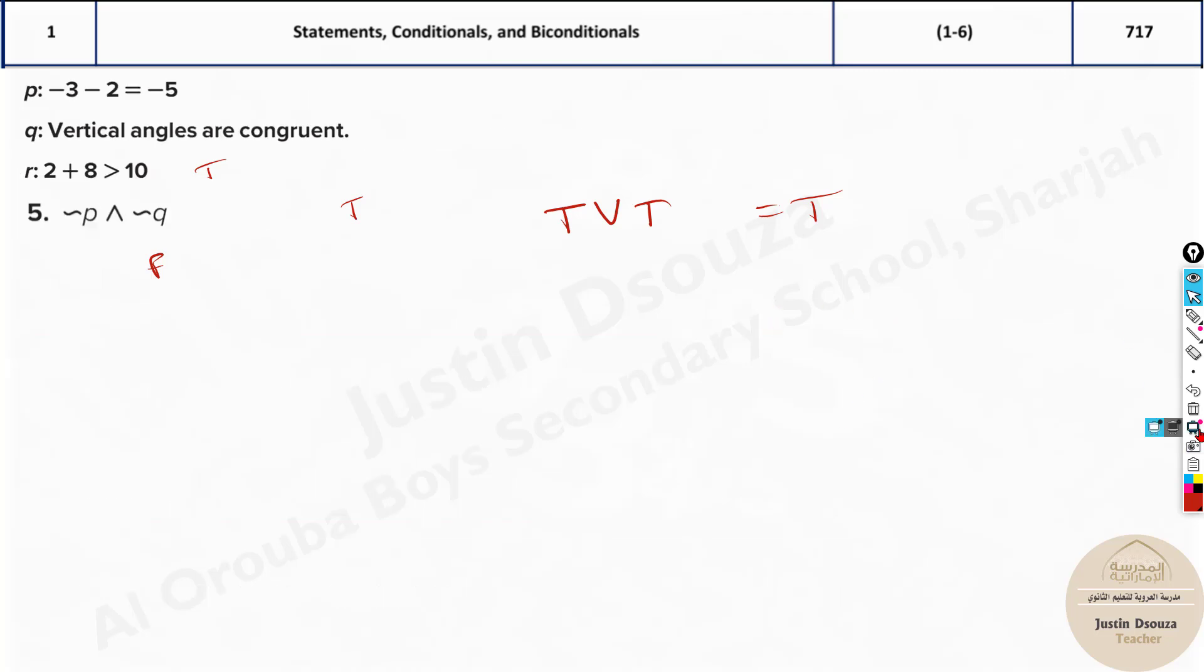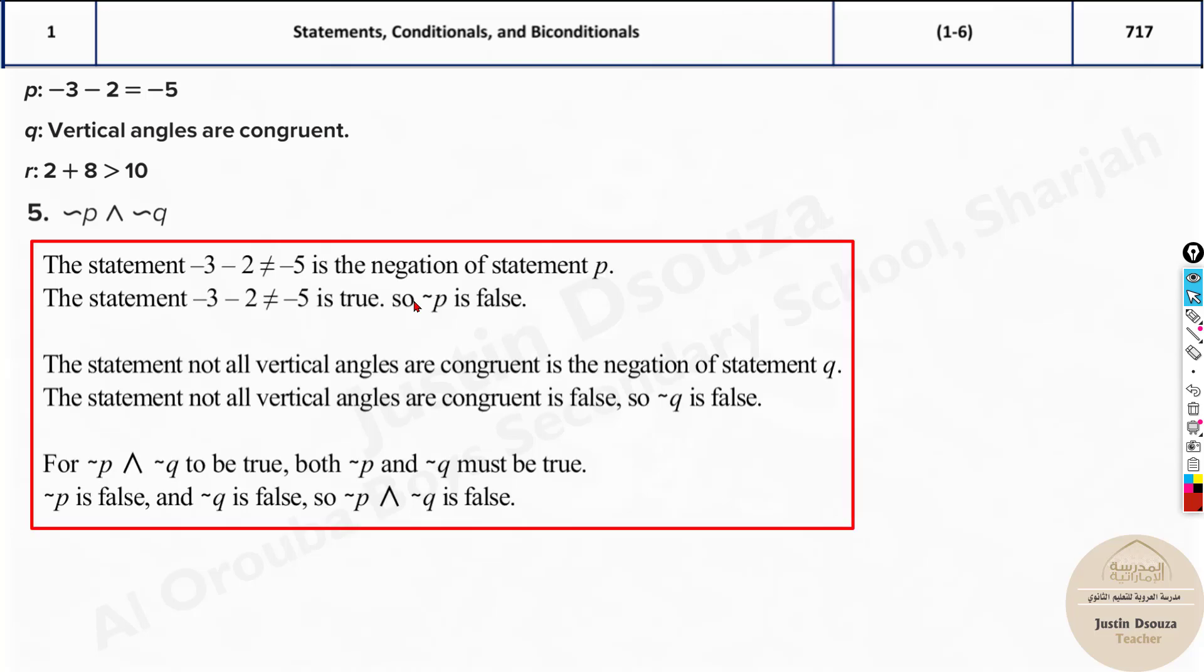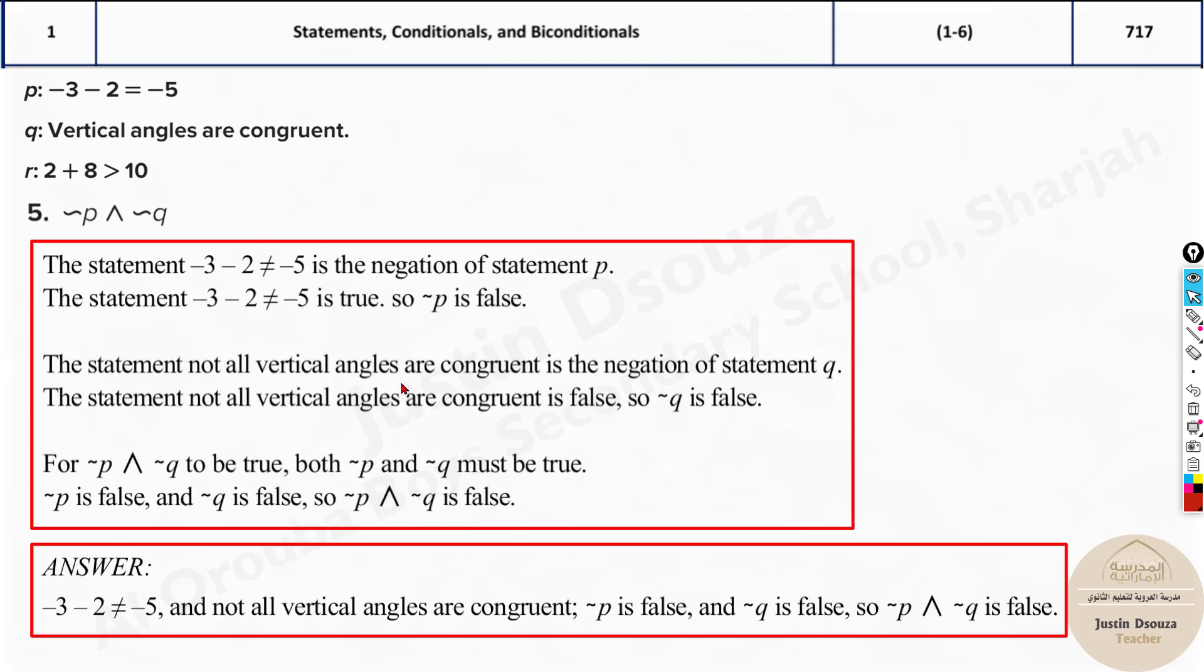So please remember the table. And then these problems are very, very easy. Here also you can see what is negation of P. This is inverted V. That is AND statement. See over here it will be written. See AND. Inverted is AND. And negation of Q. So that means both are false and false. If both are false, it will be false. You can see over here.